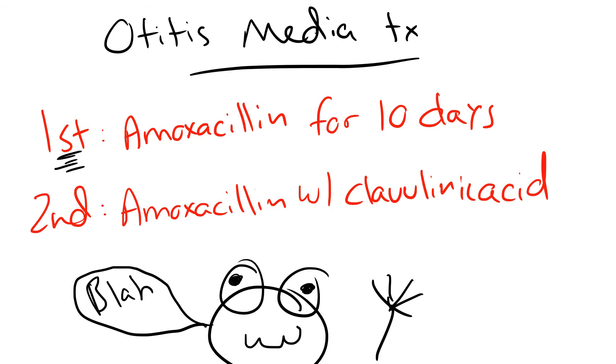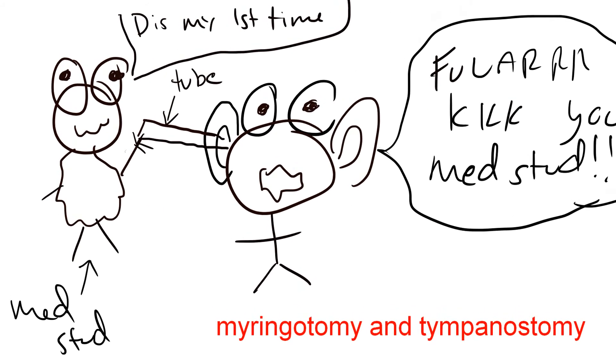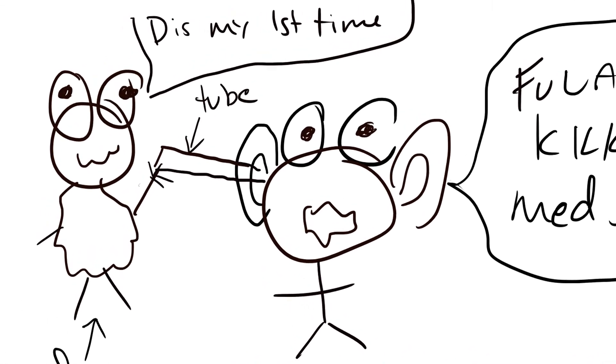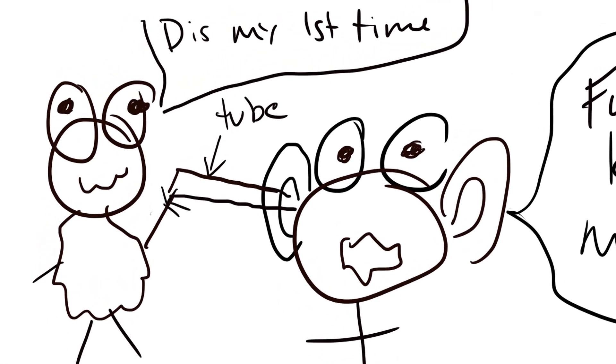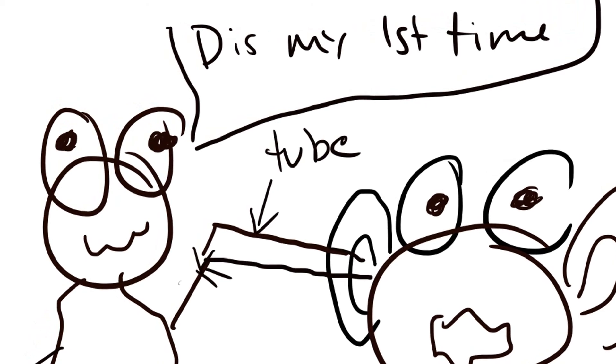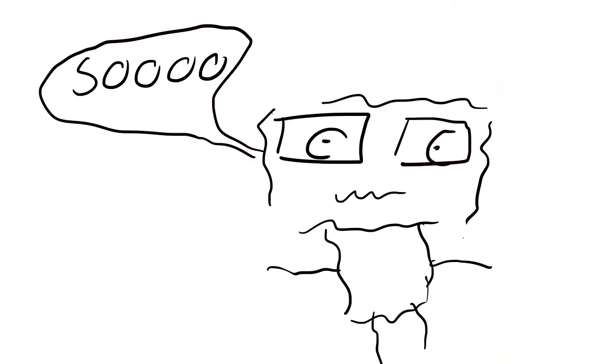So first-line therapy is amoxicillin for 10 days. Amoxicillin with clavulanic acid, augmentin, is second-line therapy. If they keep getting these infections or they have an effusion, then you're gonna have to drain it with a procedure called a myringotomy and a tympanostomy tube. I can't even pronounce that right but basically it's just a tube. It's inserted into the tympanic membrane and it drains the effusion over time and then the tube's just removed.